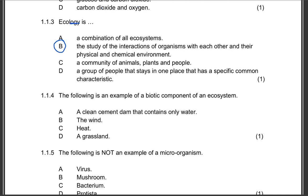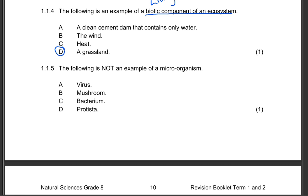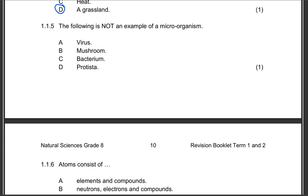Question 1.1.4: The following is an example of a biotic component of an ecosystem. We need to remind ourselves that when we talk about a biotic component, we are talking about living organisms. We have living organisms and non-living components or factors. Which of the following is an example of a living factor? Grassland, heat, wind, or a clean cement dam that contains only water? The correct answer will obviously be D, grassland. Grassland will contain grass, that's obviously a plant that is able to photosynthesize. That's a living organism.